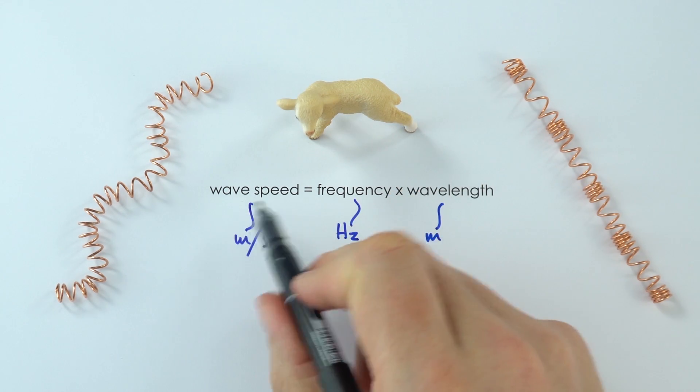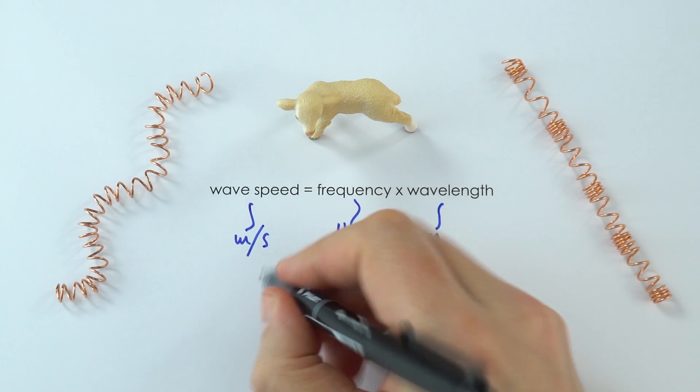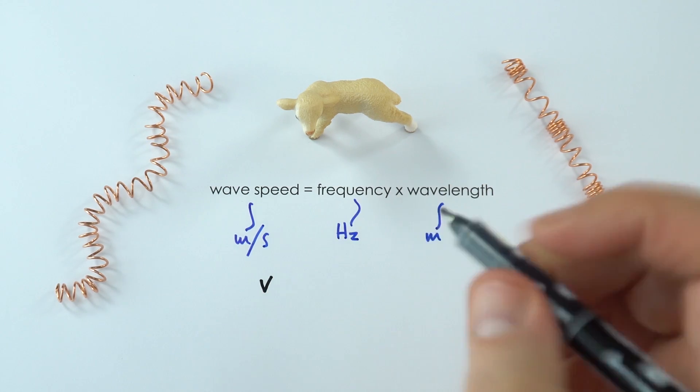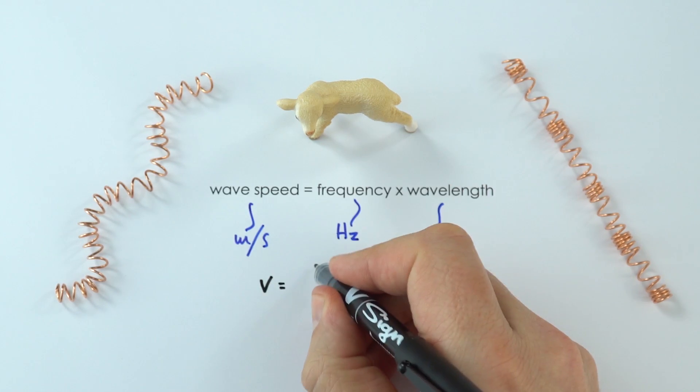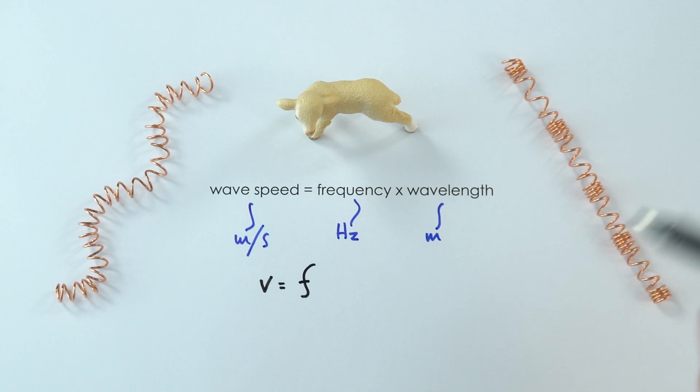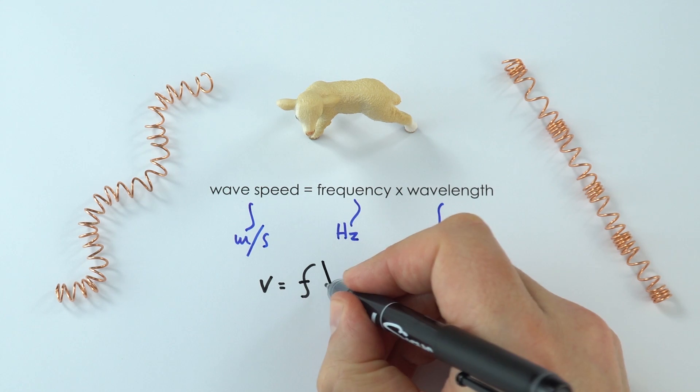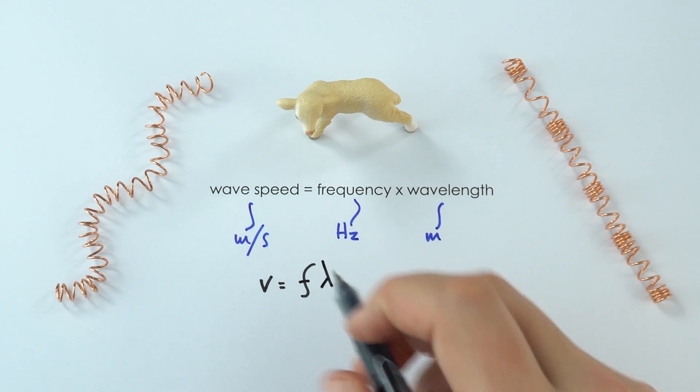And effectively, to shorten wave speed, because it's the speed of something, we just give it the letter v. That's equal to the frequency, which is small f, multiplied by the wavelength, which is this Greek letter lambda. So that's from the Greek alphabet.